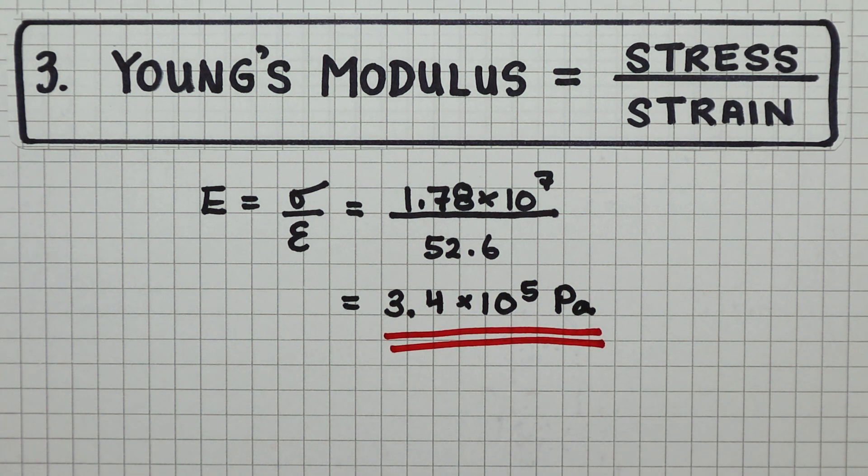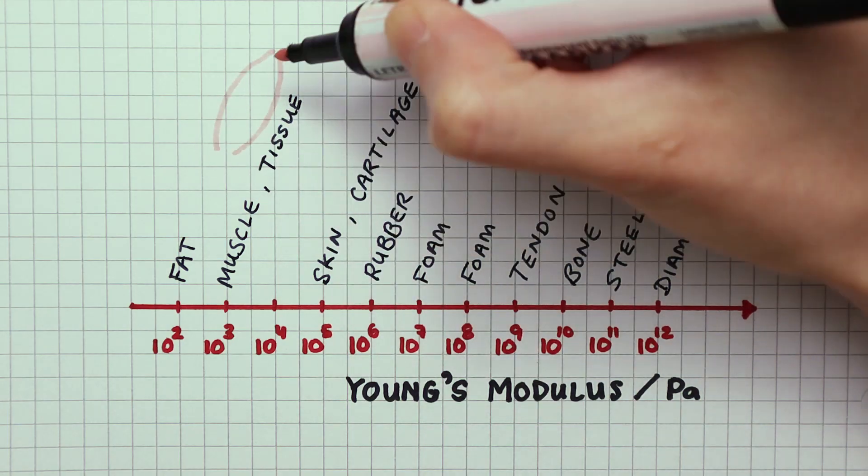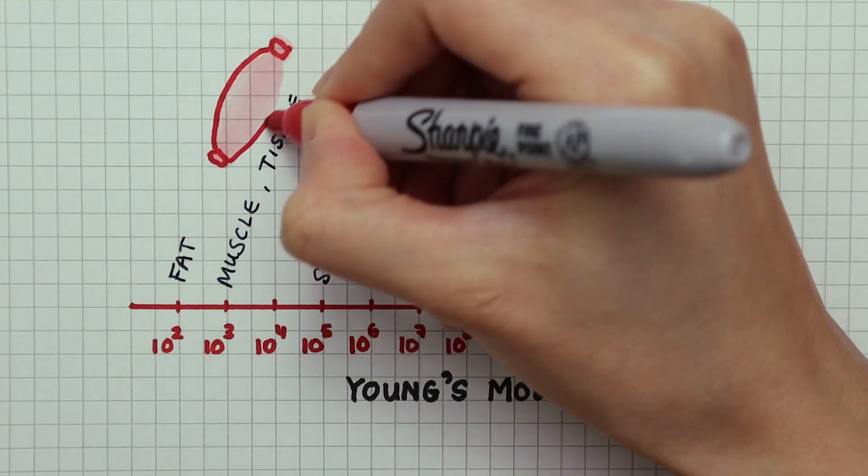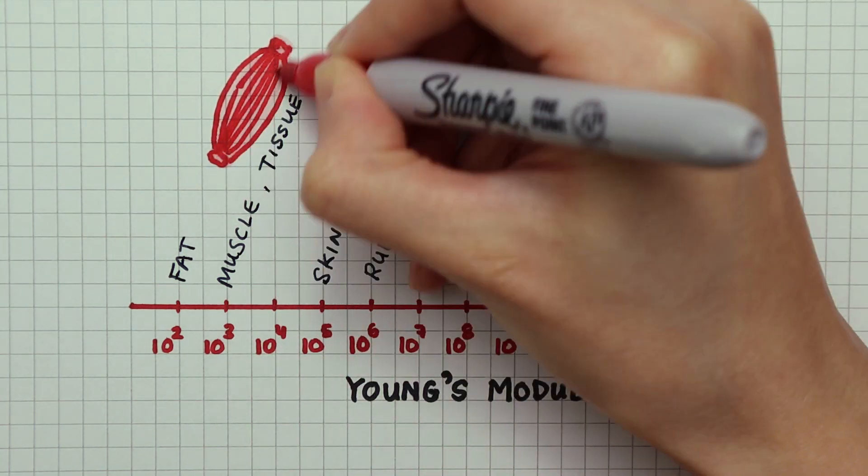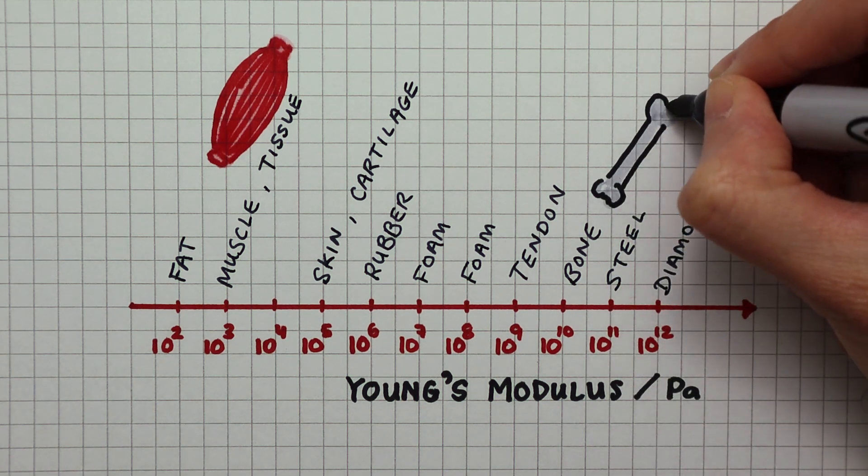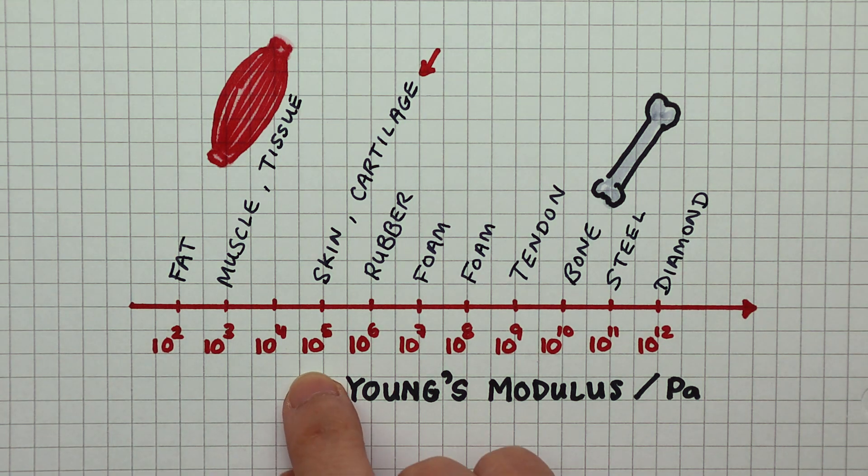Let's compare this to the Young's modulus scale of different common materials. The Young's modulus of muscles and tissues is in the region of 10 to the power of 3 pascals. At the top end of the scale, we have tendons and bones. Elastigirl's Young's modulus is closest to skin and cartilage.